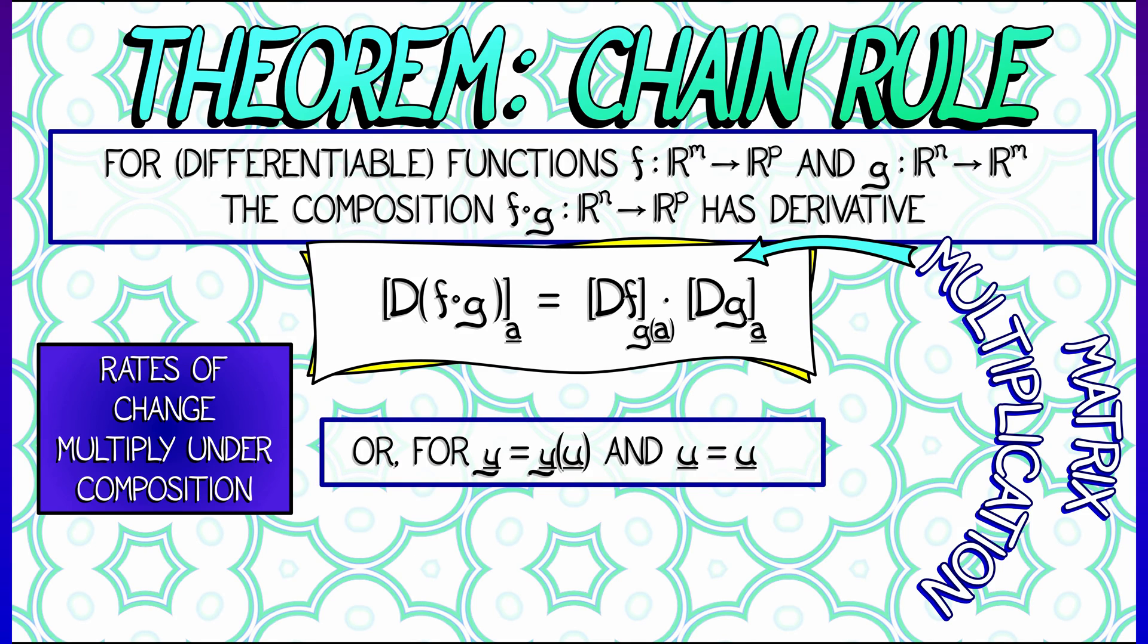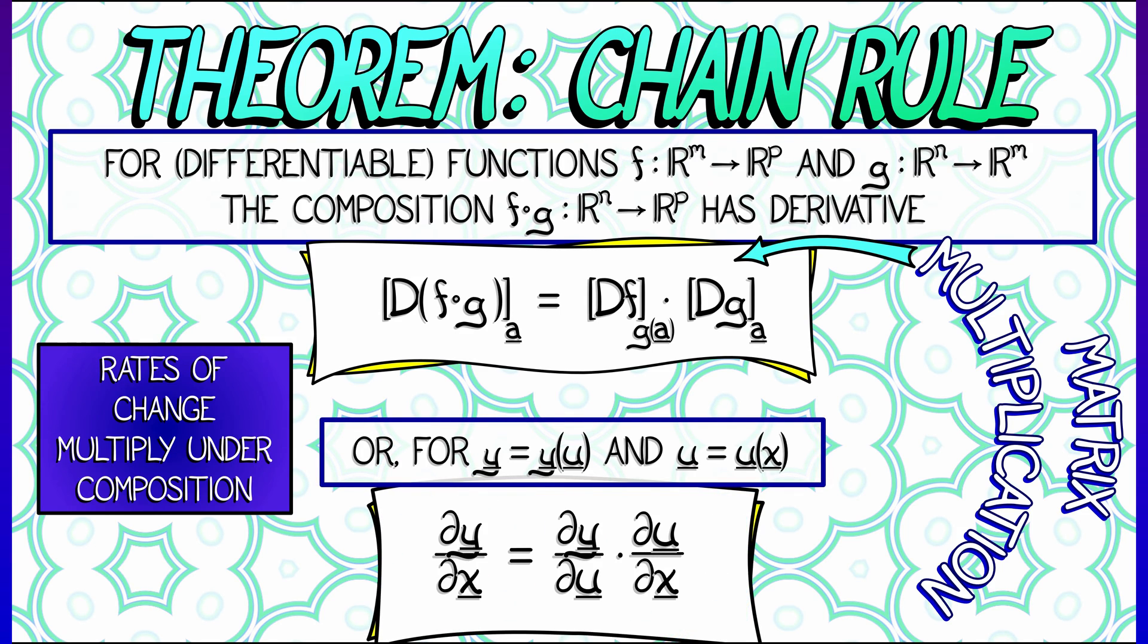Now, we can do this in Leibniz notation as well. If y is a function of u, and the u variables are a function of x variables, then the derivative of the y variables with respect to the x variables equals the derivative of the y variables with respect to the u variables times the derivative of the u variables with respect to the x variables, keeping track of evaluation points as needed.